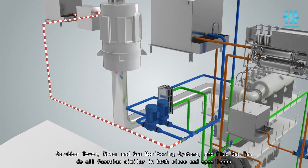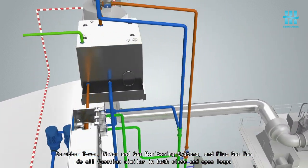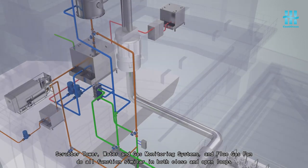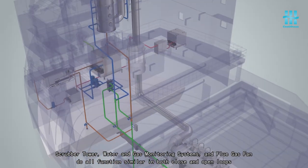Scrubber tower, water and gas monitoring systems, and flue gas fan all function similar in both closed and open loops.